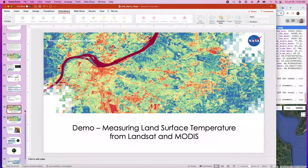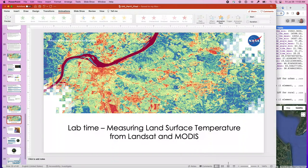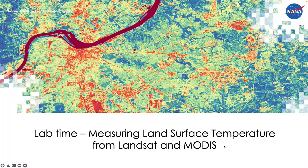Now that I've walked through all three scripts, we're going to give you some lab time to work with those scripts on your own. We're giving you roughly 30 minutes to go through the scripts, change the parameters for your own area of interest. If you have any questions during this time, please let us know and we'll be here to answer them. We're now giving you this time to work on calculating your own land surface temperature for your area of interest.